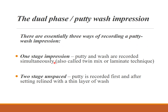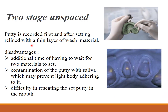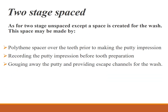For the dual phase putty-wash technique, there are three ways: one-stage and two-stage. The one-stage technique records putty and wash simultaneously, also called the twin mix or laminate technique. The two-stage unspaced technique records the putty first, and after setting, relined with a thin layer of wash material. Disadvantages include additional waiting time for two materials to set, contamination of the putty with saliva, and difficulty reseating back in the mouth.